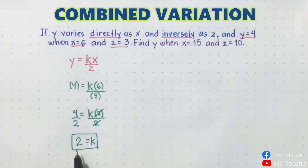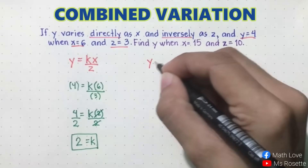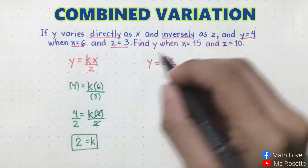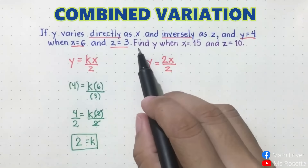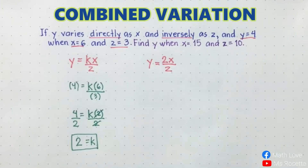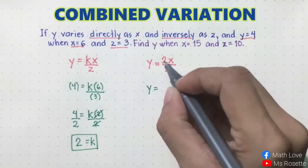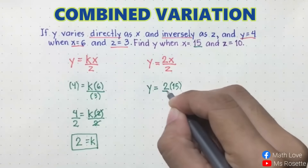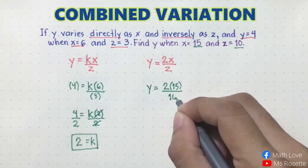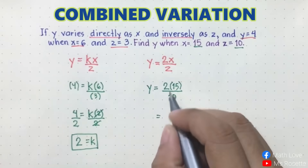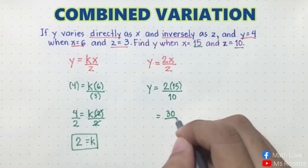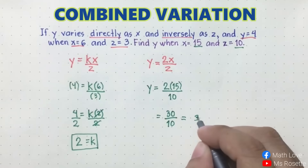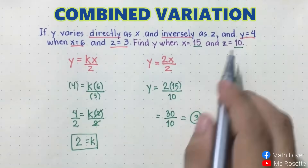Now change the equation to use k equals 2. So y is equal to 2x over z. Now find y when x is 15 and z is 10. Substituting: y equals 2 times 15 over 10. 2 times 15 is 30, so we have 30 over 10. 30 divided by 10 gives us 3. So y is equal to 3 when x is 15 and z is 10.